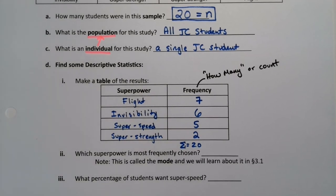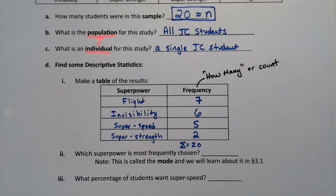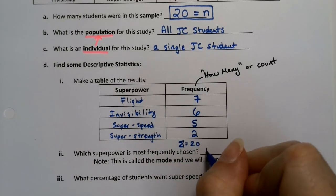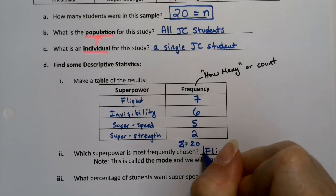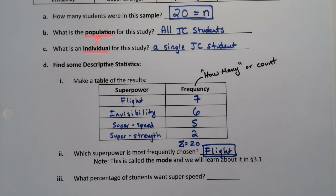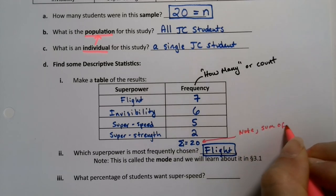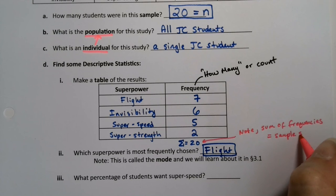Now which superpower was the most frequently chosen? That actually has a special name - it's called the mode, and you'll learn about that in section 3.1. The mode is whichever one has the highest frequency, which in this case was flight. Perhaps we should make a little note: sum of the frequencies equals sample size if you do it right.